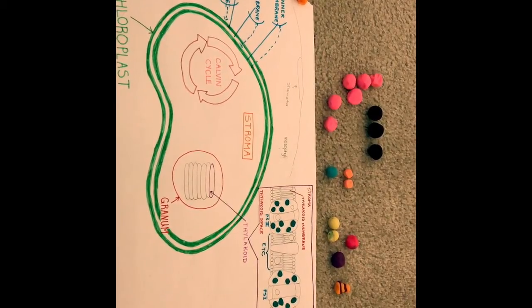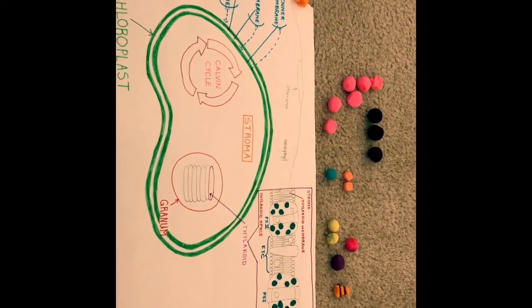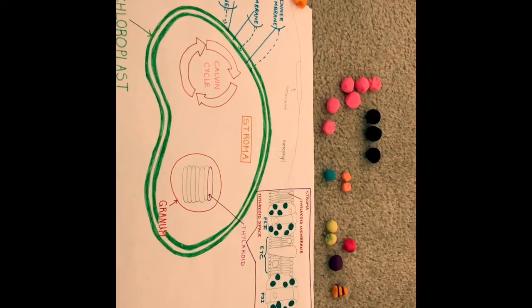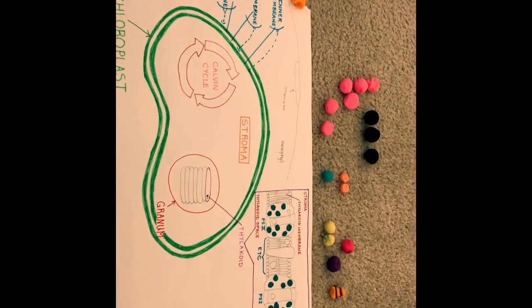Although it occurs in many different types of organisms, the process of photosynthesis takes place in the chloroplast of plants, which is what we are going to be demonstrating in this model.